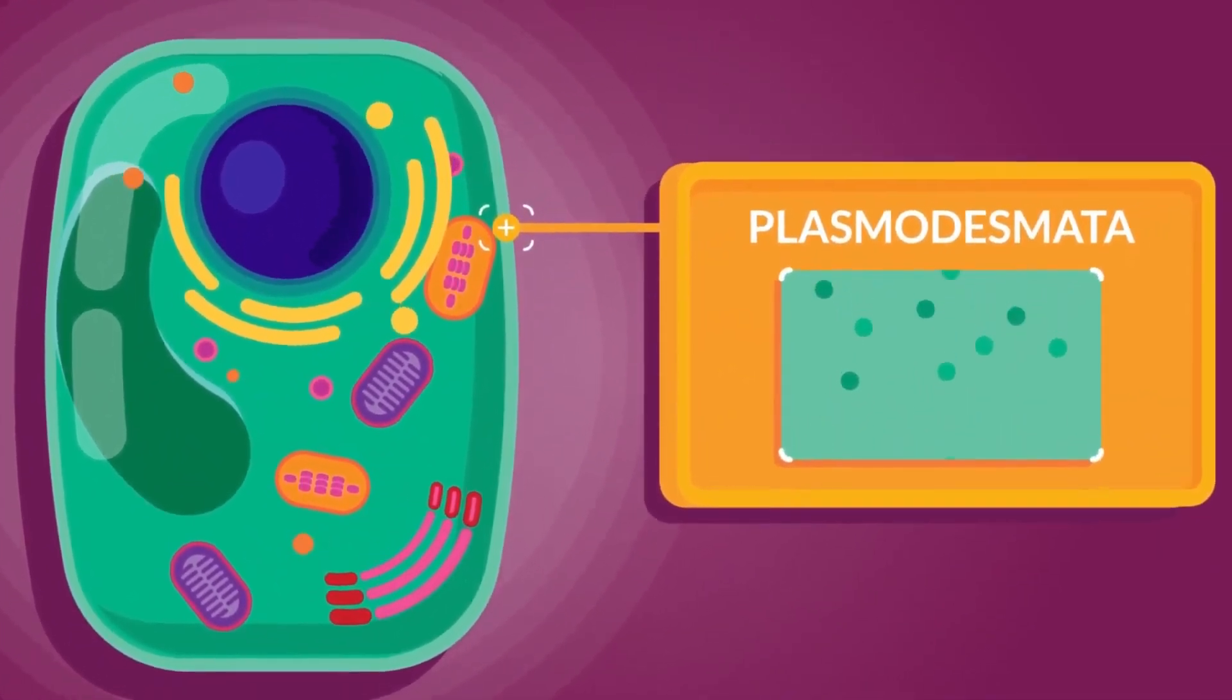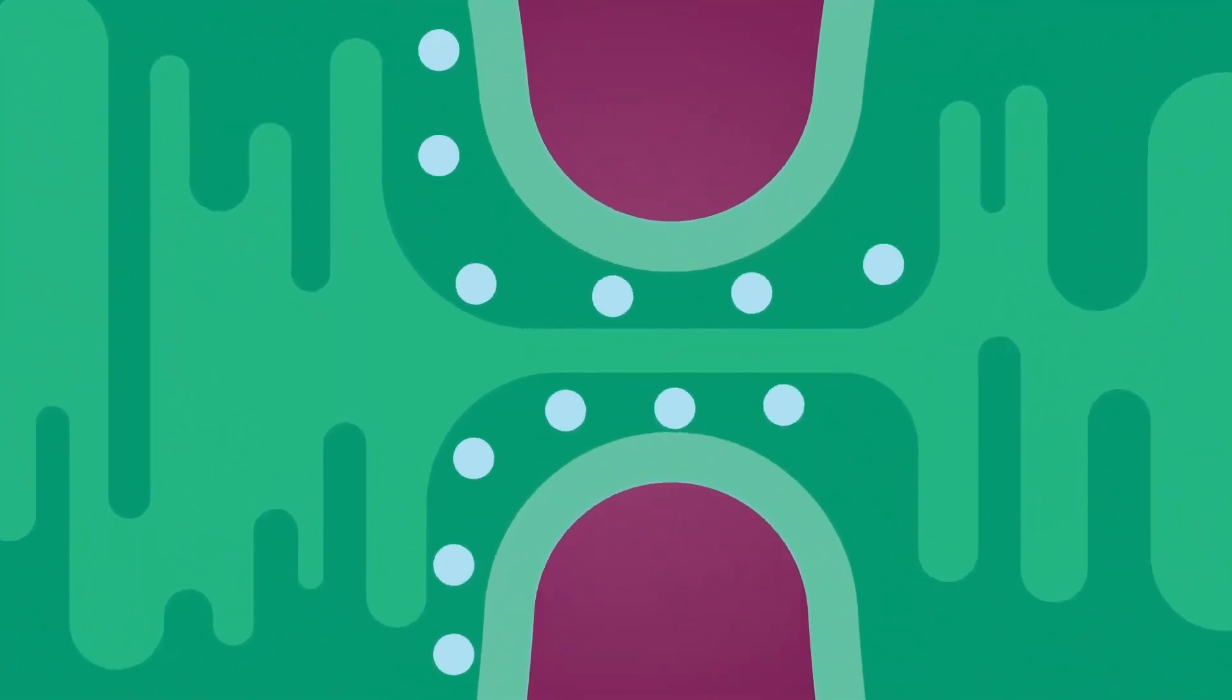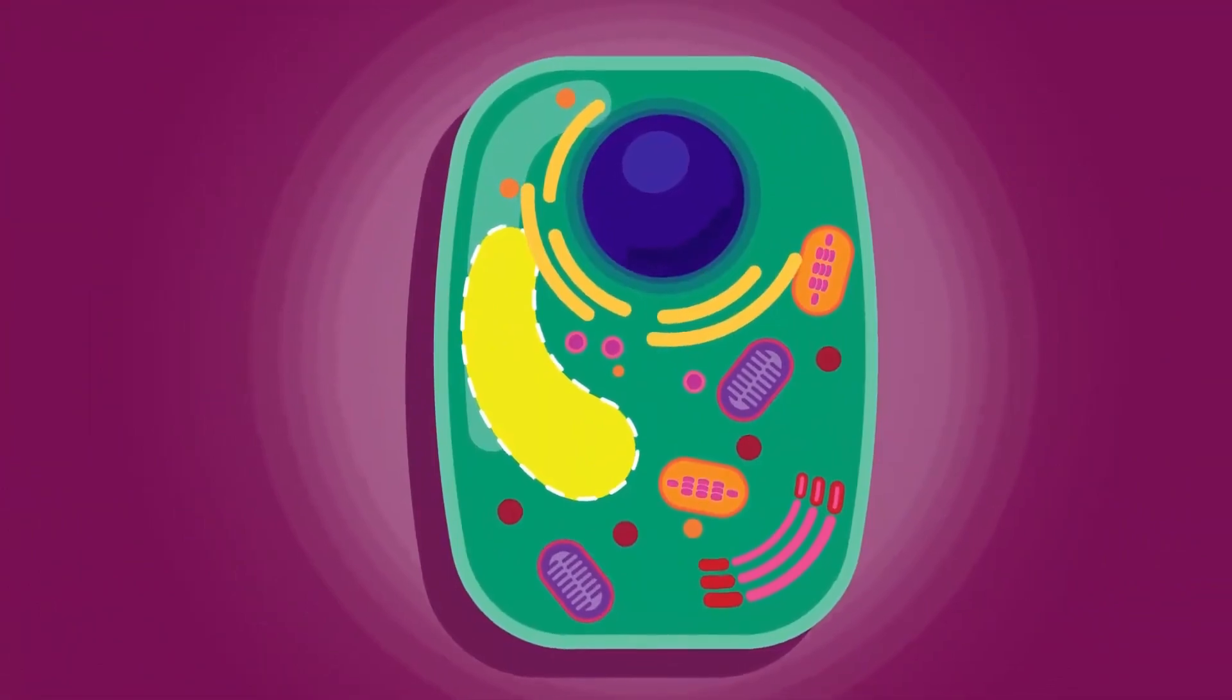The plasmodesmata is like a road connecting a neighborhood together. Substances send to neighboring cells with the help of cytoplasm, which pass through pore-like structures in the cell walls. Plant cells also have large vacuoles that cover most of the cell.